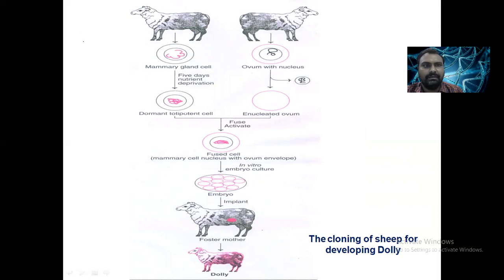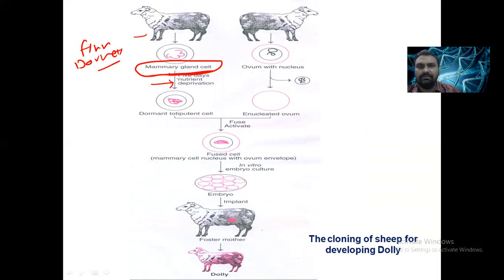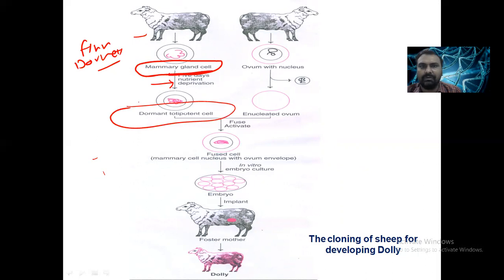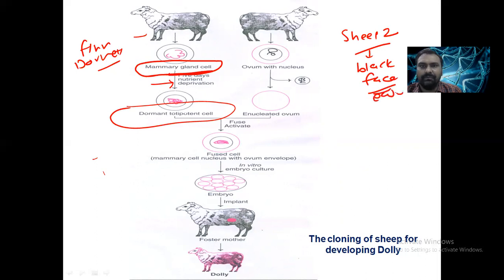In the Finn Dorset sheep, the scientist took a mammary gland cell and kept it for five days of starvation. The nutrient-deprived cell goes into a dormant totipotent state. From a second sheep — a black-faced sheep — an ovum was taken and the nucleus was removed, leaving an enucleated ovum.